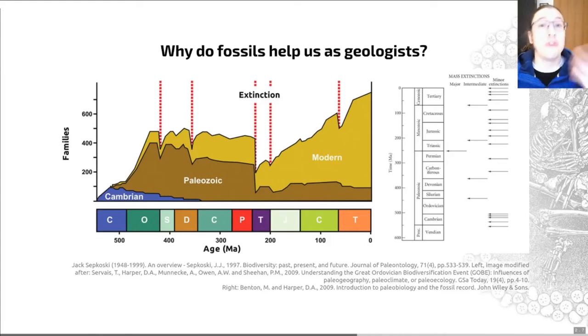Wherever there is a faunal turnover—this is another word for an extinction—a change in the fossils that we found in a rock, we can identify that in the rock units as long as there are fossils preserved. And of course, if you look at this diagram on the left here, you can see that we have different groups of animals organized, in this case, into different collections of creatures as we go through geological time.